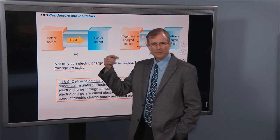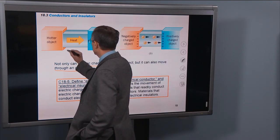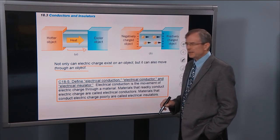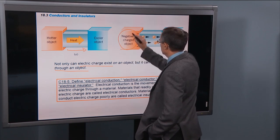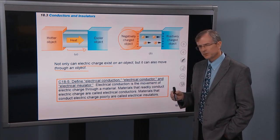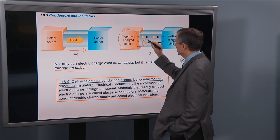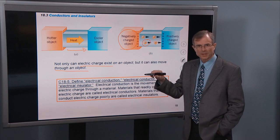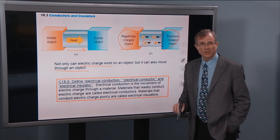With an analogy with thermodynamics, if you have a hotter object, you have heat that flows to the colder object. The electrical analogy to that is if you have a negatively charged object, a bunch of electrons in there, then electrons in this intermediate object are going to be repelled by that negatively charged object, and attracted to the positively charged object.